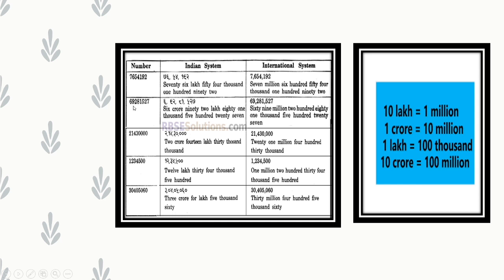Let us see another example. We are given the number 69,281,527. In the Indian system, after the last three digits put a comma, then for every two digits put a comma — reading it as 6,92,81,527. Whereas in the International system, for every three digits we put a comma — reading it as 69,281,527.